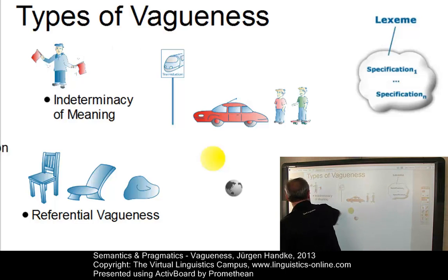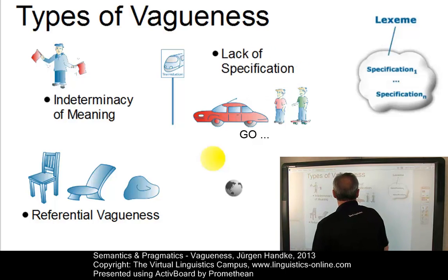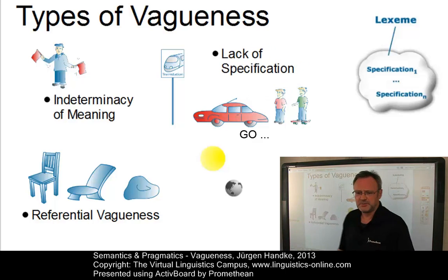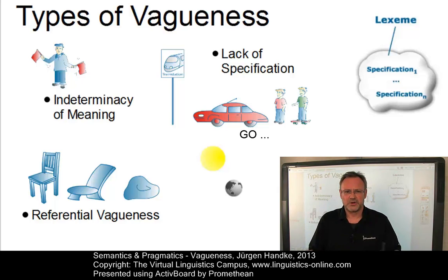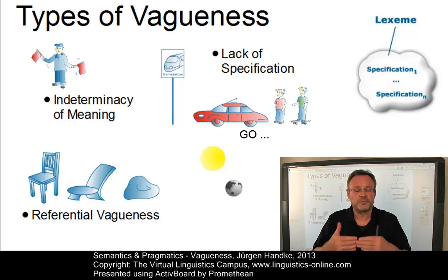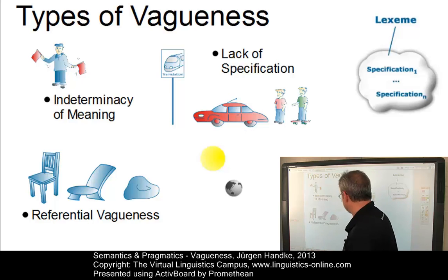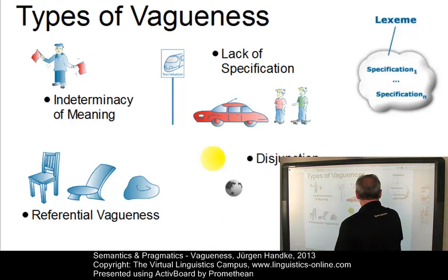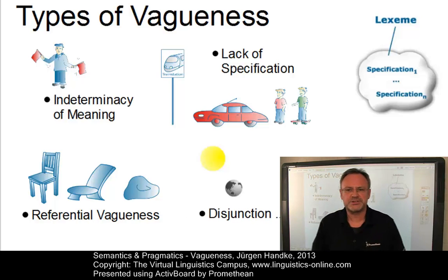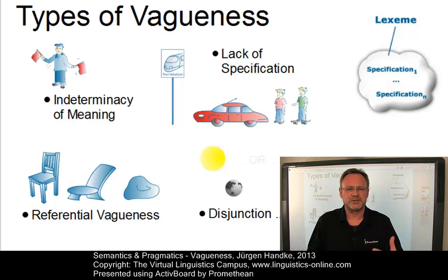Verbs of motion, such as 'go,' are often unspecified with regard to their meaning — they lack a precise specification. 'Go' can involve drive, walk, run, and so on. And last but not least, we have a phenomenon referred to as the disjunction of interpretations, and the typical case involves sentences which include the inclusive connective 'or.'